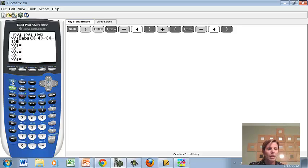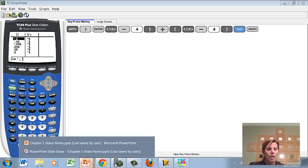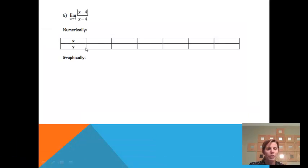And then we'll go ahead and go to table because it did say to find it numerically first. And when I do this, I'm just thinking we need to go back to the other screen because I don't think we filled in the values. So we need to do that real quick. Okay, when I go to fill in the values, I know I'm approaching four. So again, I'm going to put four in the middle.